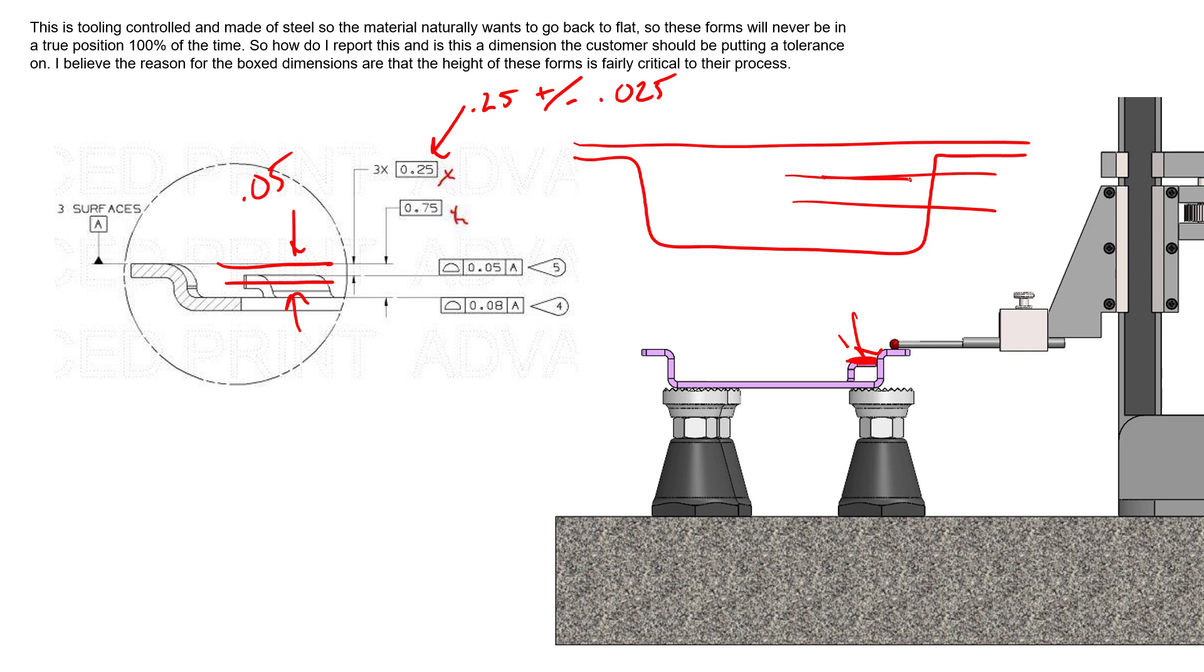We can control location, orientation, and form as long as that entire surface is inside that tolerance zone, and that's true for both surfaces. The bottom surface needs to be 0.75 plus or minus 0.04 since this is 80 microns with respect to datum A, which is the plane established from those three surfaces.